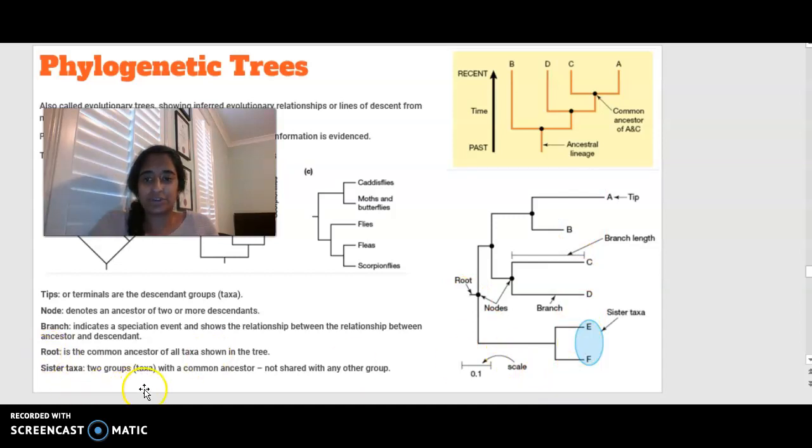Sister taxa are two groups with a common ancestor that are not shared with any other group here. So you can see if we look at the original, this one comes off here. So all of these guys at some point share a common ancestor over here. Whereas a sister taxa, they only share a common ancestor with the original that we start off with at the root.